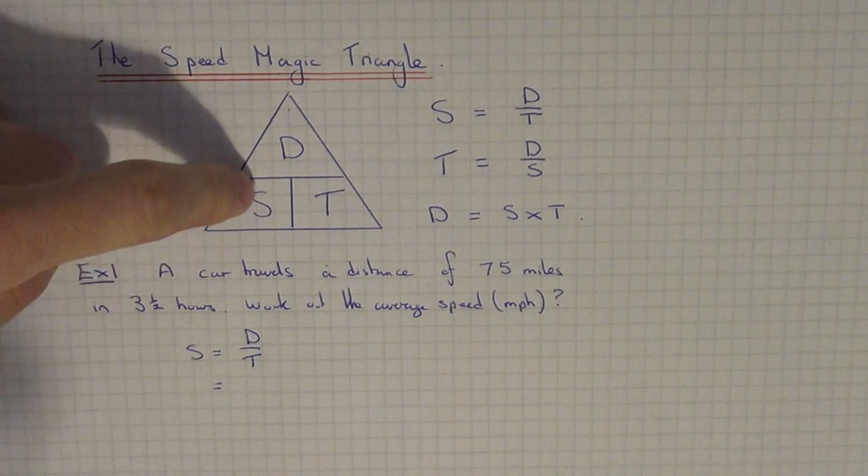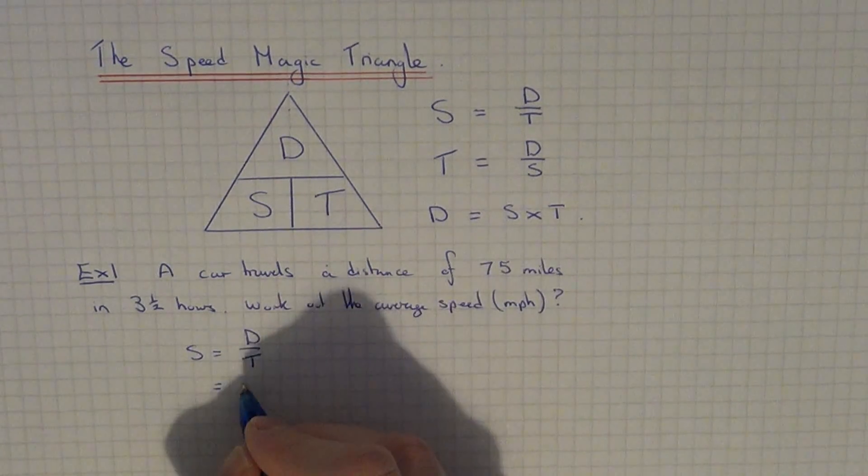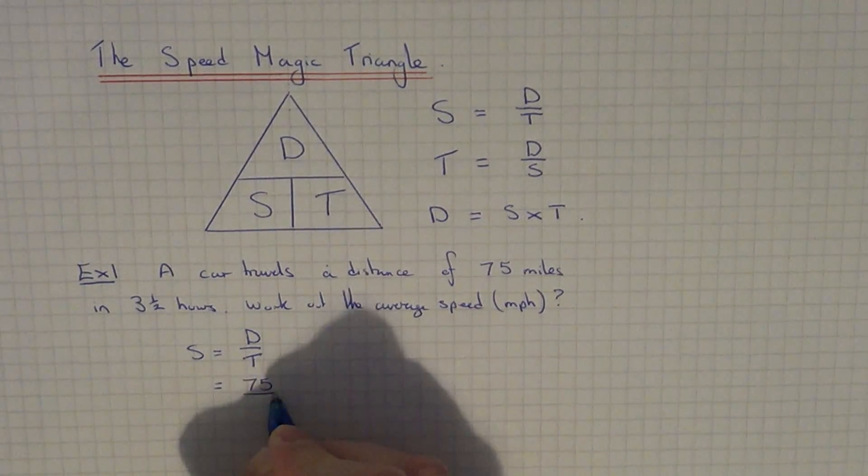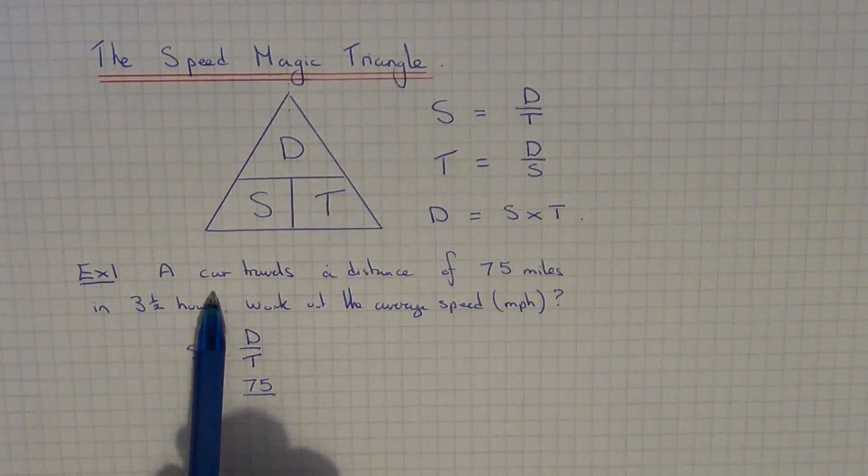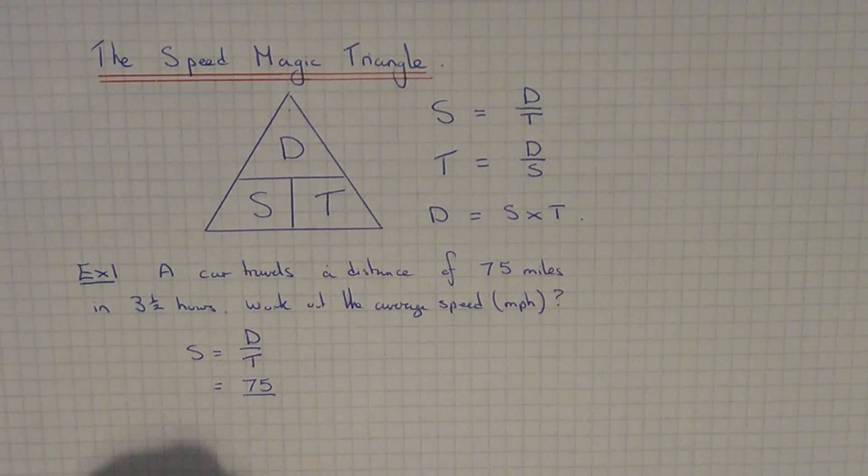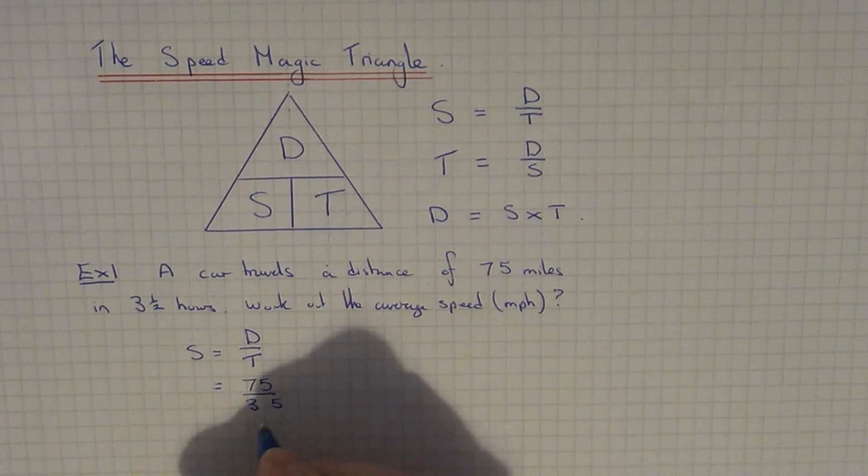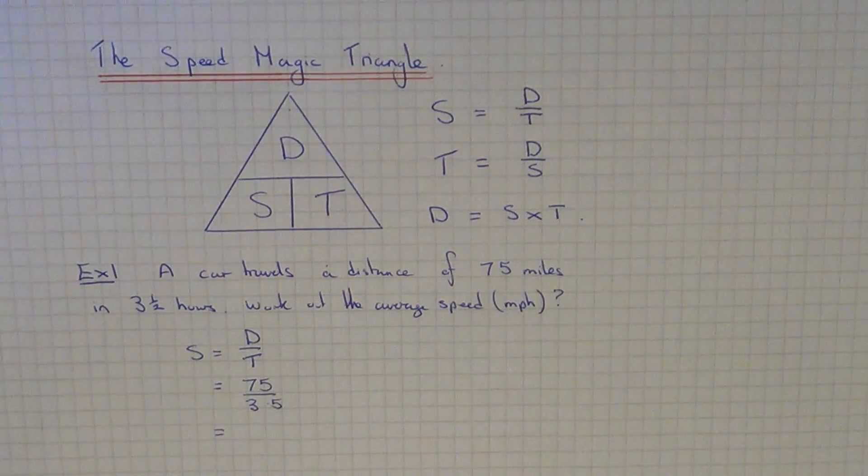Next thing we need to do is substitute our numbers into our formula. You can see the distance is 75, and the time that the car takes is three and a half hours to cover that distance. We can write that as 3.5.